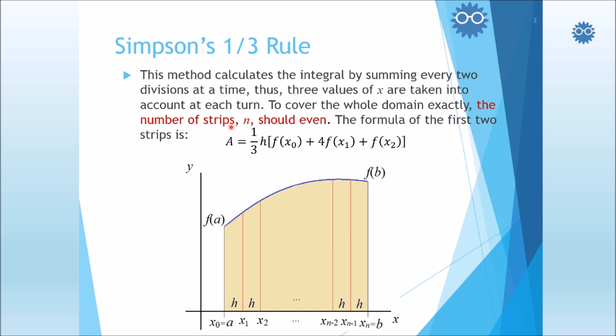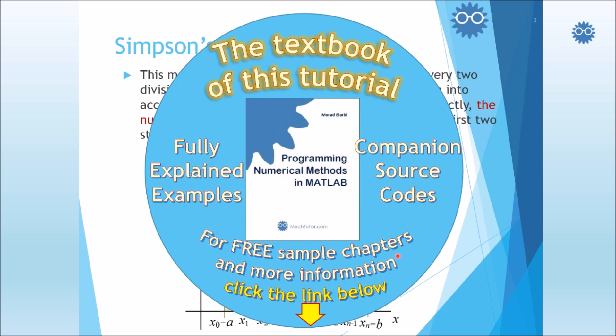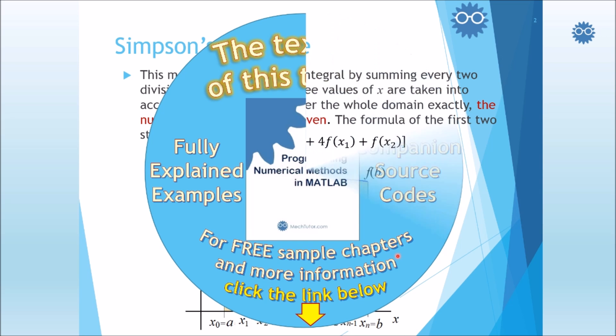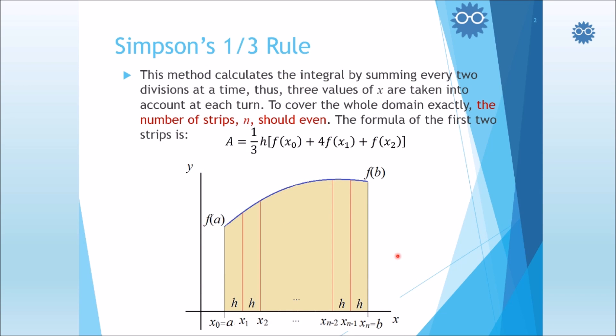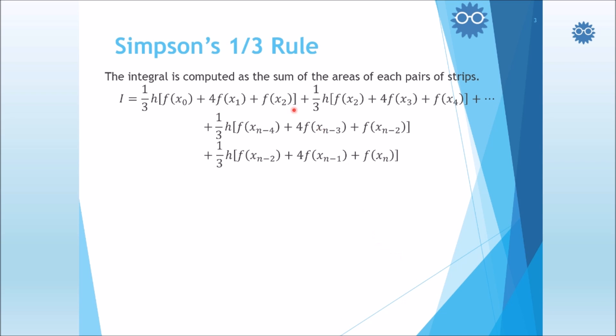Thus, the number of the strips should be even, because they must go two by two. The total area is equal to the summation of the every two successive areas individually. We need to formulate a general form based on this equation.